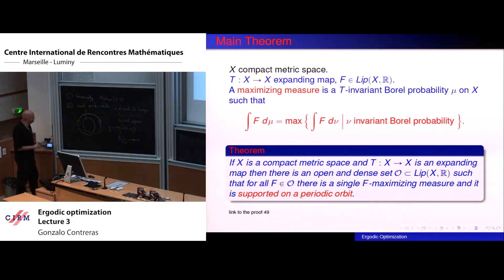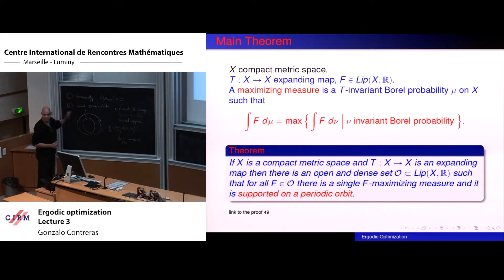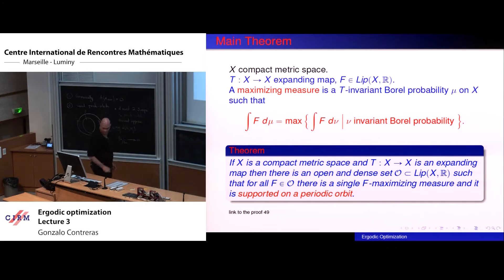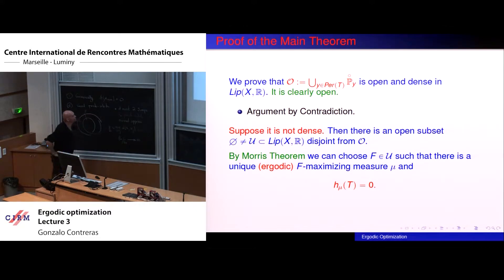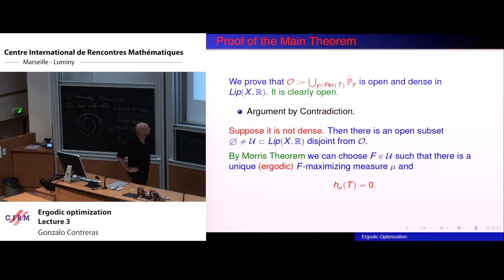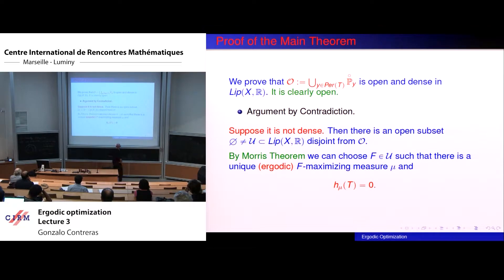We will see today how to obtain this kind of pseudo orbits from zero entropy. The argument is by contradiction. We have to see what happens if we are not in this situation.